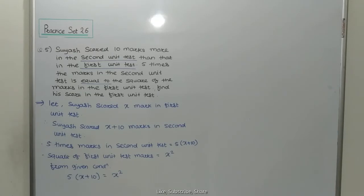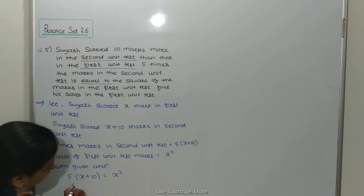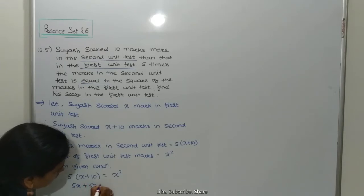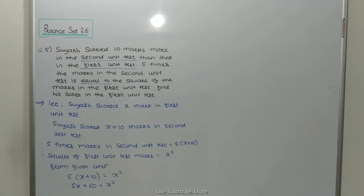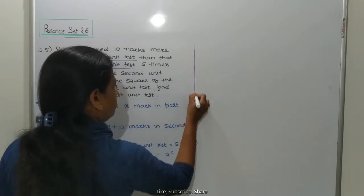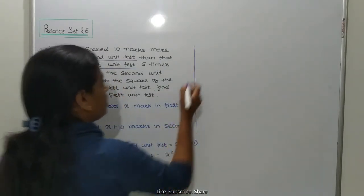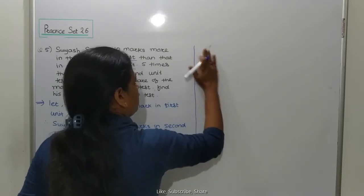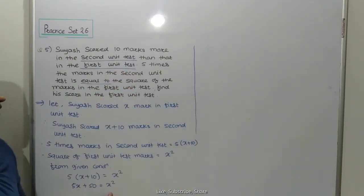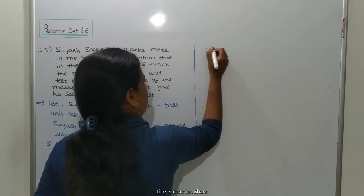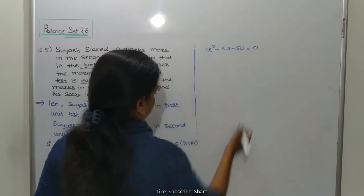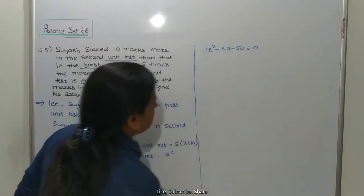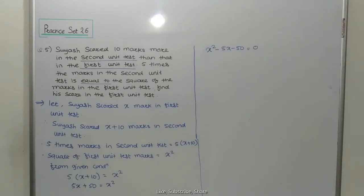From the given condition: 5x plus 50 equals x squared. Rearranging: x squared minus 5x minus 50 equals 0. This is the quadratic equation, so factorize this one.